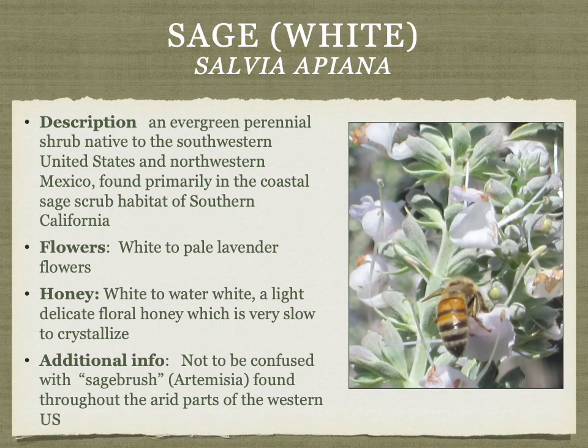The other common sage is white sage (Salvia apiana), not to be confused with sagebrush, which is wind-pollinated and produces no nectar. White sage produces a honey that is white to water-white — a light, delicate floral honey that is slow to crystallize.